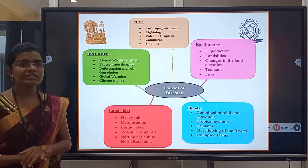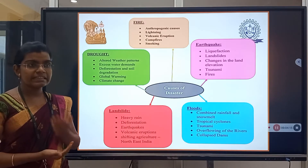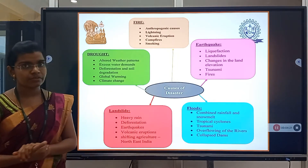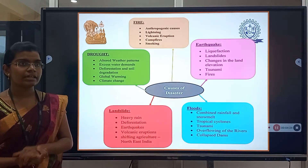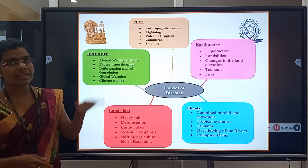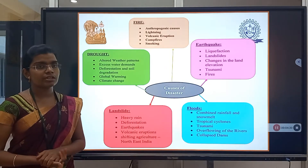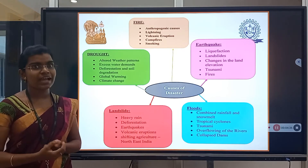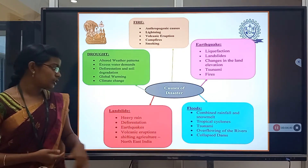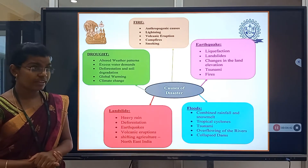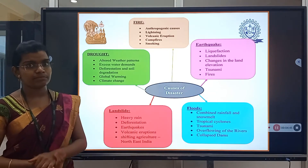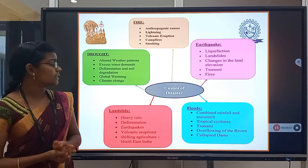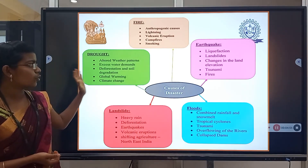Causes of disaster differ based on each type. Earthquake is due to liquid precipitation, landslide, changing land elevation, tsunami, and fires. Flood is due to tsunamis, heavy rainfall, collapse of dams, or overflowing of rivers. Landslide is due to heavy rain, deforestation, earthquake, and water erosion. Drought is due to weather patterns, excess water demand, deforestation, soil degradation, global warming, and climate change.